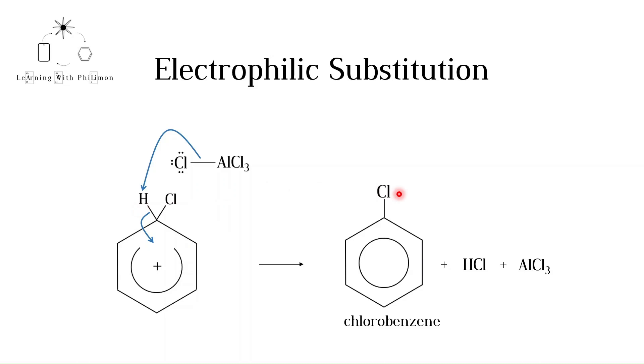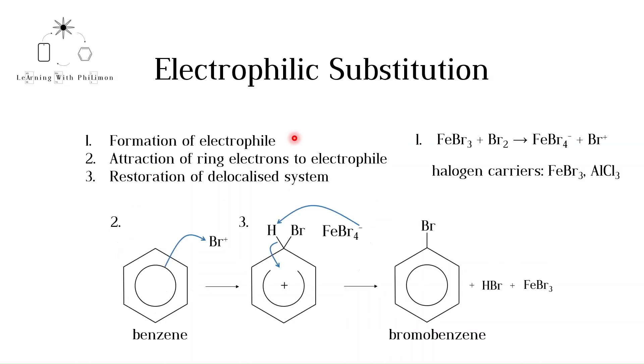Now, let's take a look at the mechanism again, but using bromine. The mechanism can be summarized in three steps. Note that the following is a more simplified version that can be used in the IB. The first step is the formation of the electrophile. In this case, iron III bromide reacts with bromine Br2 to form the ions FeBr4- and Br+. Iron III bromide and AlCl3 are called halogen carriers, halogen containing compounds used in the halogenation of benzene.